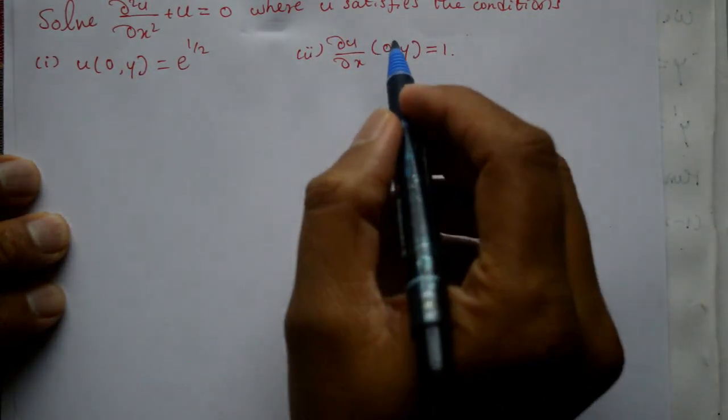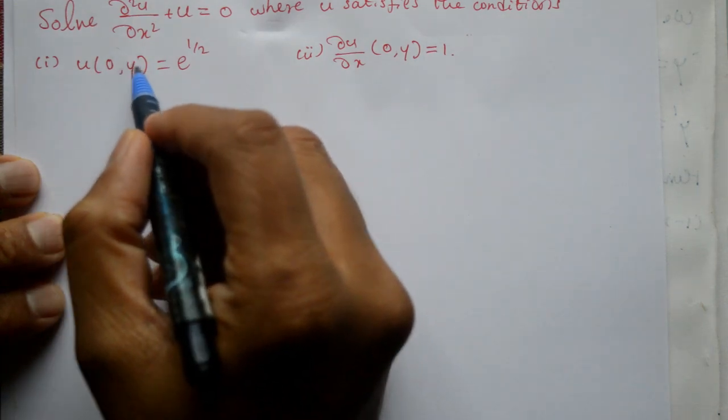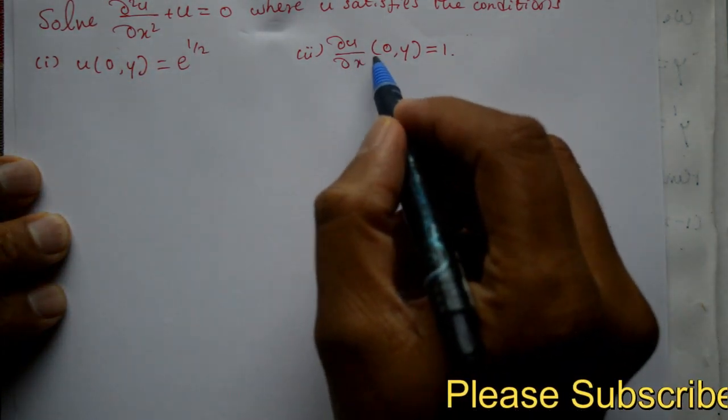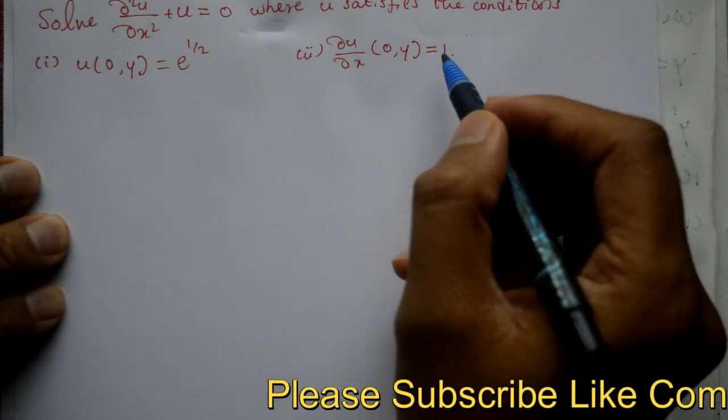We have to use the conditions. First condition: u(0,y) = e^(1/2). Second condition: ∂u/∂x(0,y) = 1.